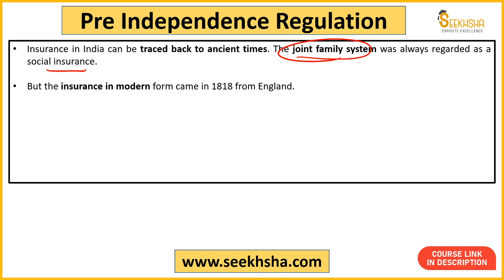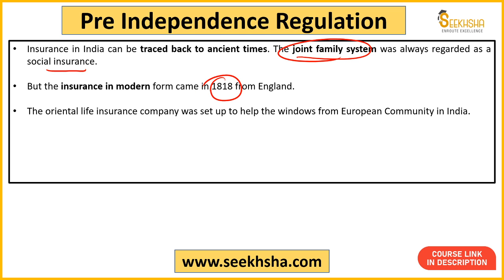Modern day insurance जैसा आप daily life में देखते हो — आप अपनी bike, गाड़ी, life, घर, factory हर चीज़ को insure कराते हो। आप insurance premium देते हो और अगर कल कुछ नुकसान हो गया तो insurance company भरपाई करेगी — मोटी-मोटी भाषा में modern insurance यही है। इस modern insurance की शुरुआत हुई थी 1818 में England से।